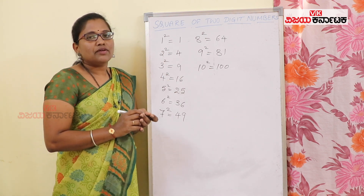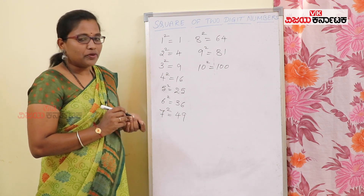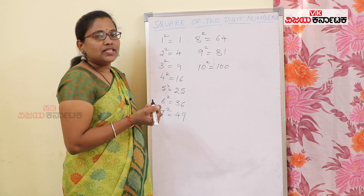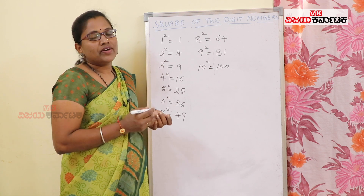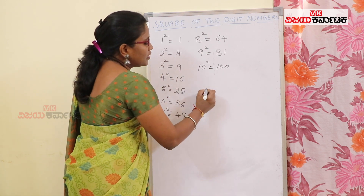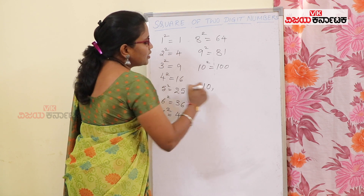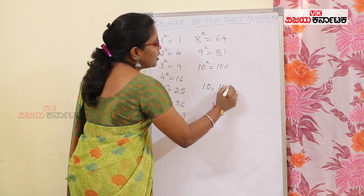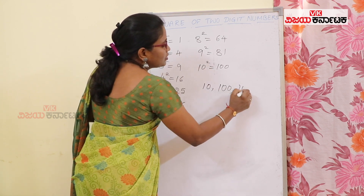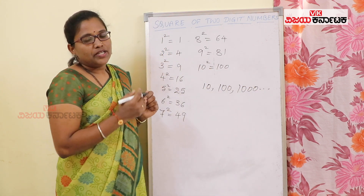If you want to see square of two-digit numbers, we will use the base and power method. If you want to see base one-to-ten, this is the base.